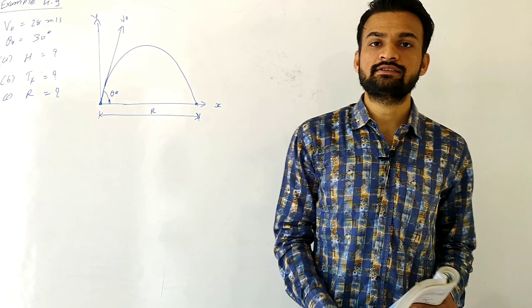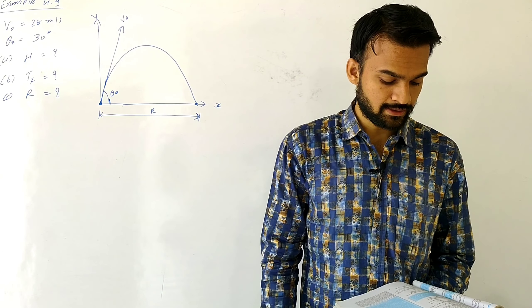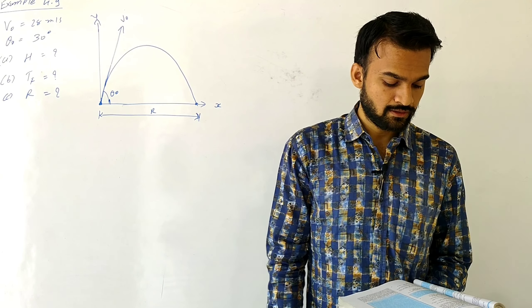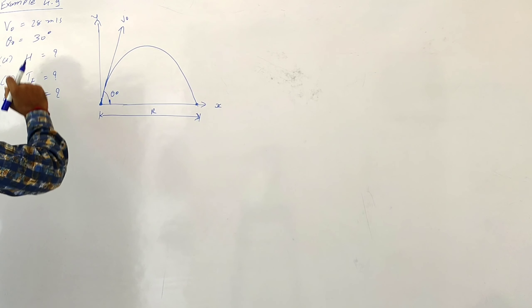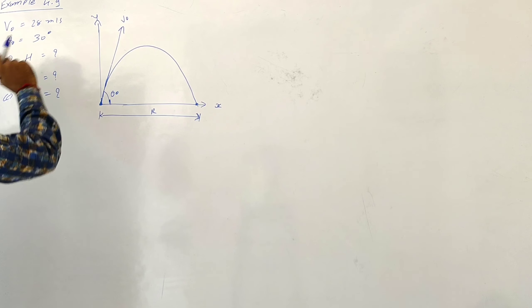Hello students, let's see example 4.9. A cricket ball is thrown at a speed of 28 meters per second in a direction 30 degrees above the horizontal. Calculate: A, the maximum height; B, the time taken by the ball to return to the same level; and C, the distance from the thrower to the point where the ball returns to the same level.